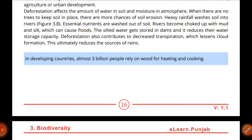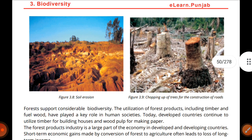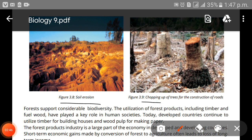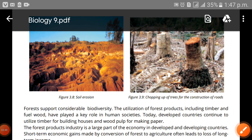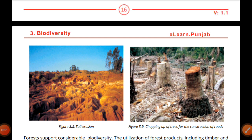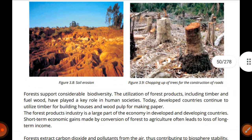In developing countries, almost 3 billion people rely on wood for heating and cooking. Looking at the picture here, you can see the soil erosion and the chopping of trees. It is very heartbreaking and heart-wrenching to see how the trees are cut down.